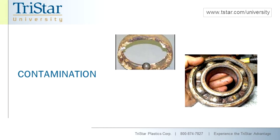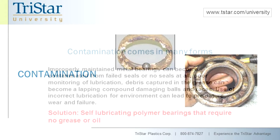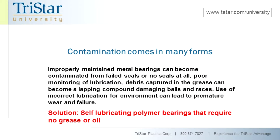First of all, contamination. We talked already about how improperly maintained bearings can become contaminated. The seals can fail. There could be occasions where there are no seals at all. Maintenance is lax, so there's poor monitoring. The debris contamination can get captured in the grease and become a lapping compound. The incorrect lubrication for the environment can lead to premature wear and failure. Contamination can also be affected by water, so it's quite critical that contaminated bearings be fixed — otherwise, they're going to fail.